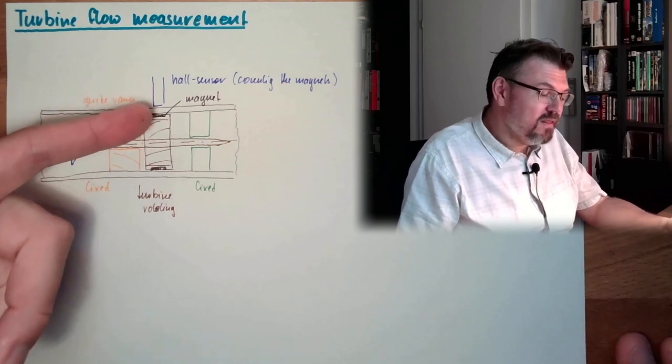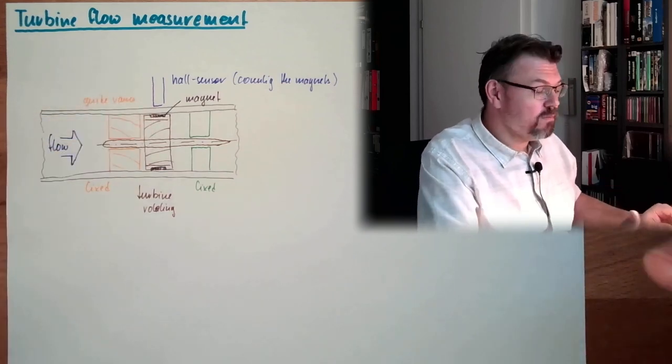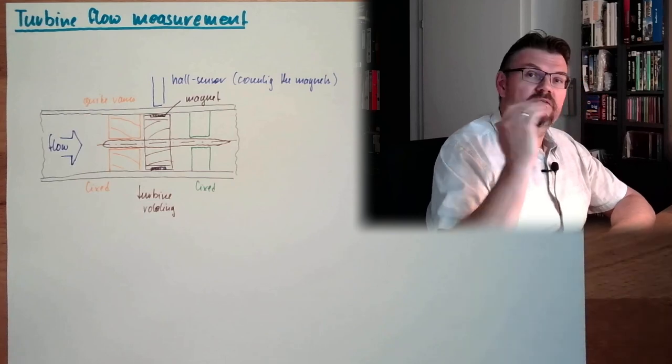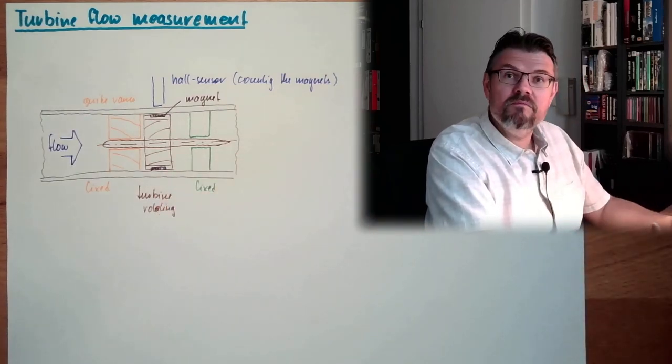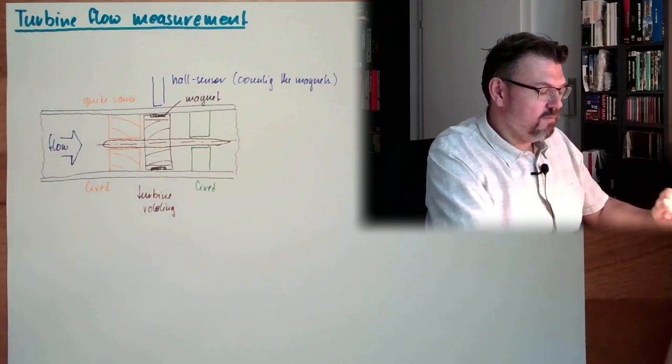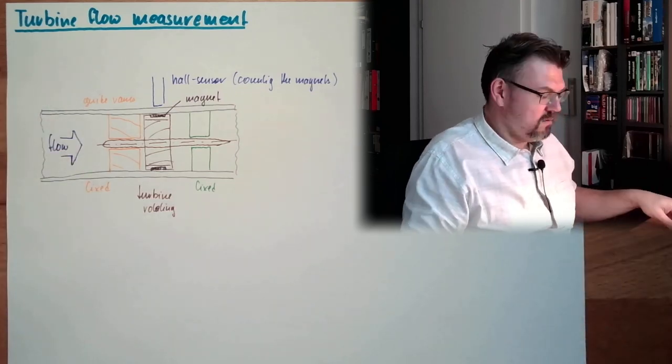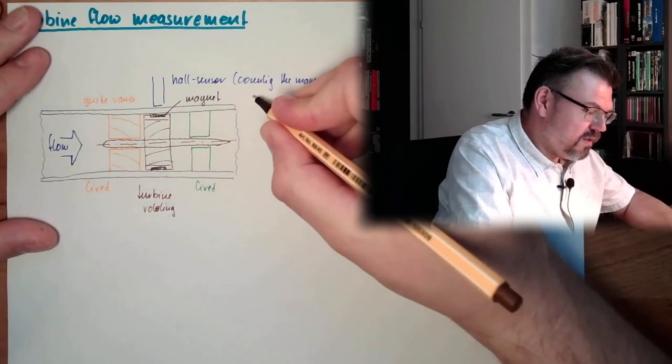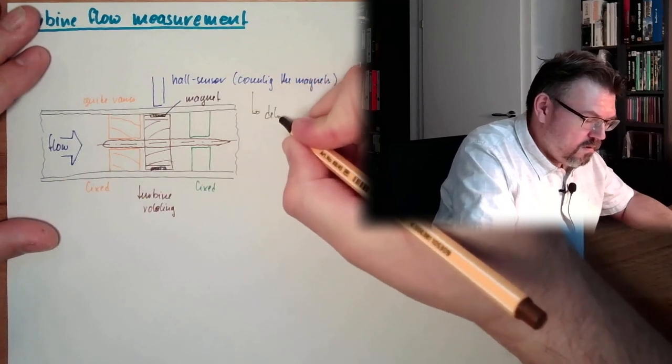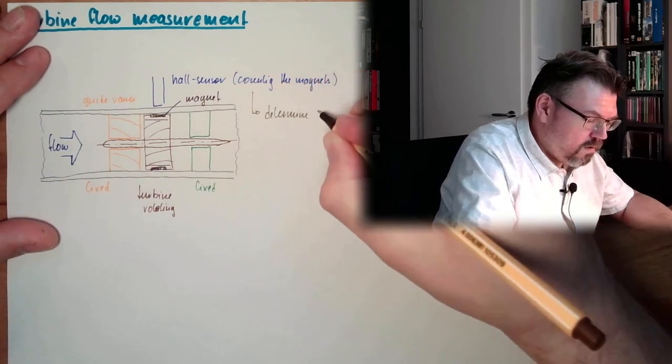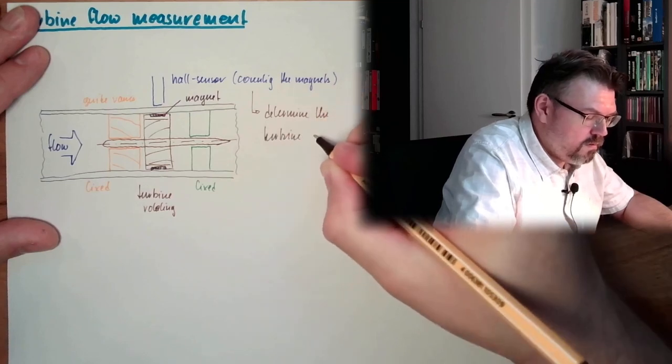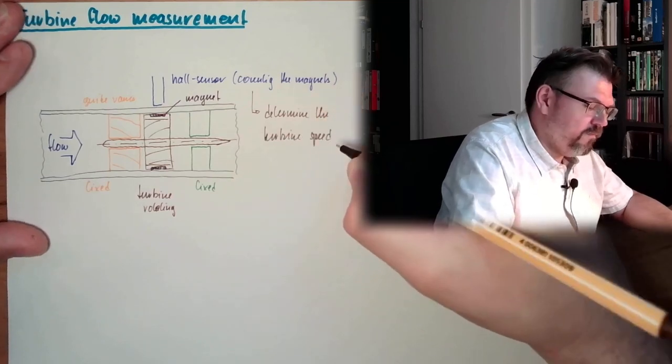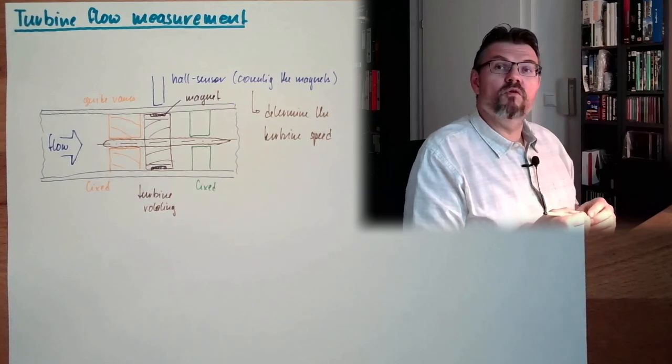So there is only this magnetic field, which will be detected by the hall sensor. And if we count a certain amount of magnets in a defined time, we know the speed of the turbine. This is how to determine the turbine speed. This is how turbine flow measurement is working.